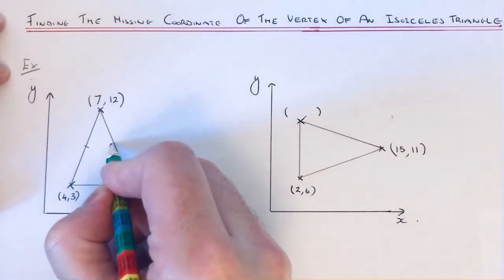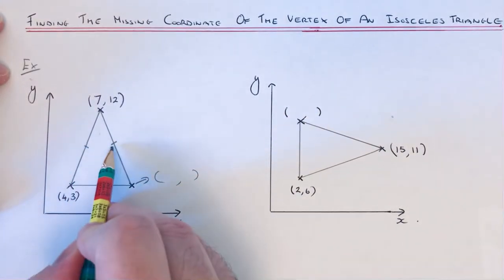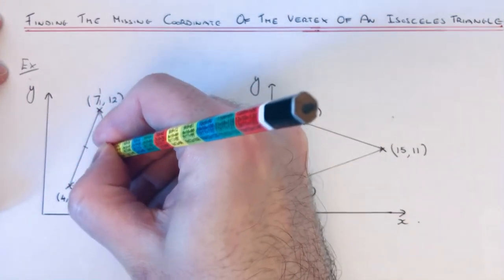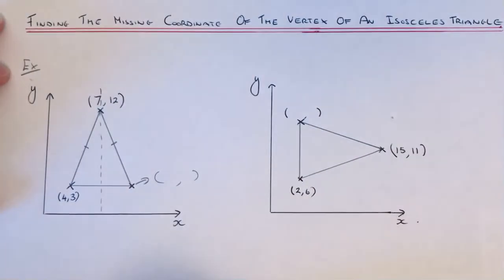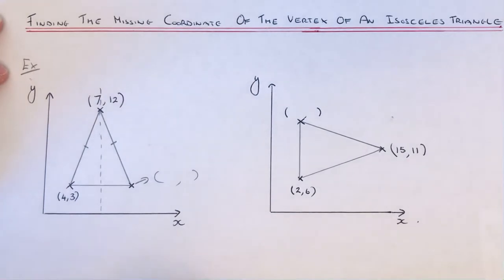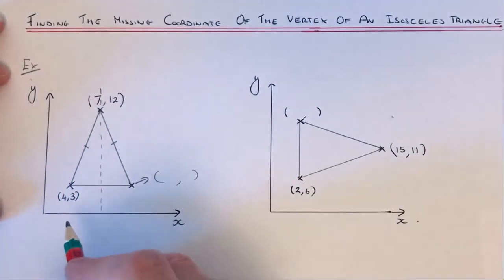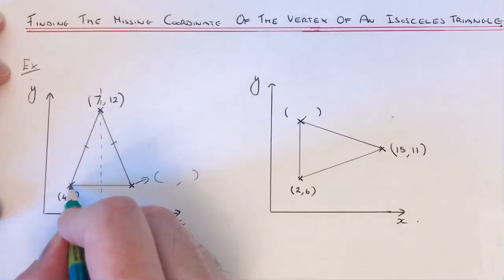We've got an isosceles triangle, so that means these two sides are the same and we have a line of symmetry down the center. The first thing you need to do on these types of problems is mark the numbers along the x-axis and the y-axis. Let's start with this point here.